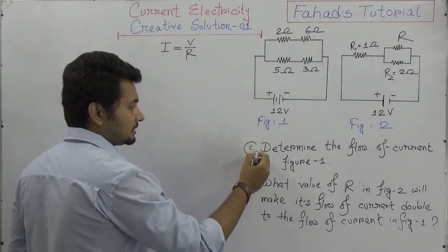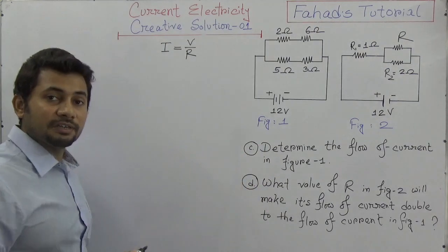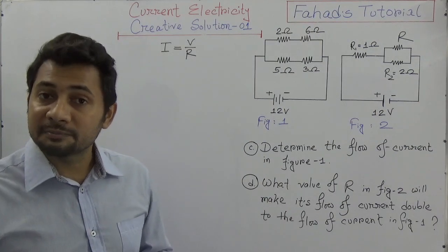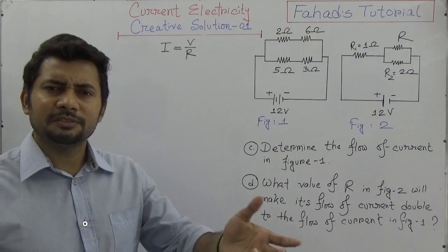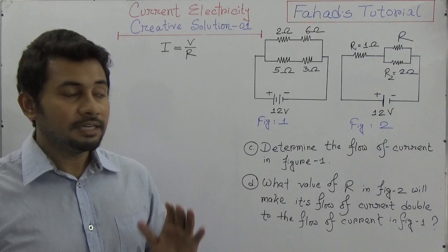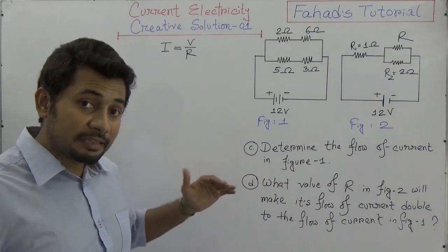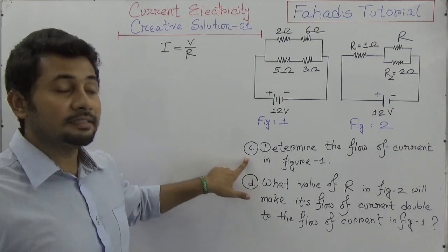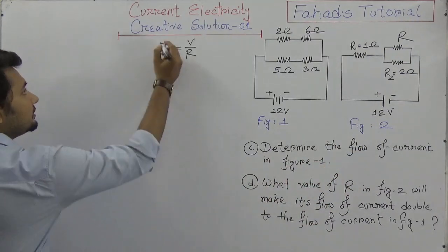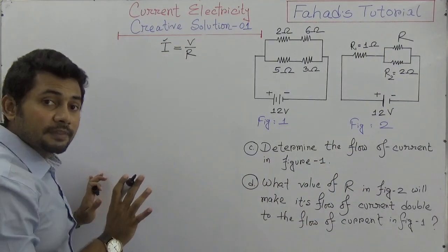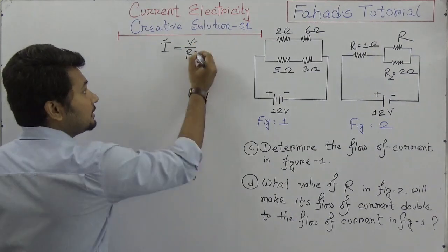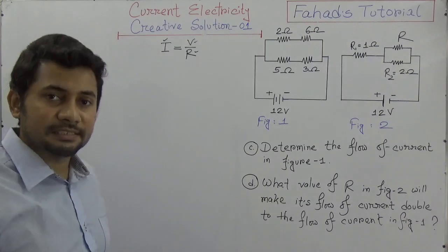This is question C and D. As you know, creative questions are composed of four types of questions. I'm not going to explain type A and B because those are easier. Let's focus on the mathematical problems. We need to find the value of I — we're given the voltage and need to find the resistance, meaning we need to determine the equivalent resistance.